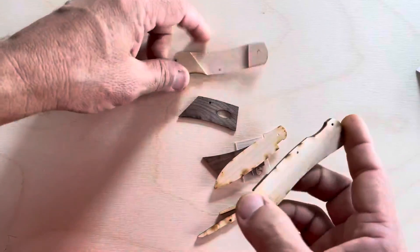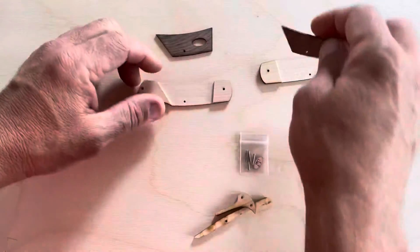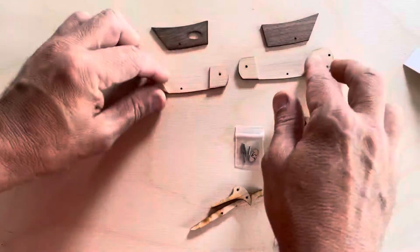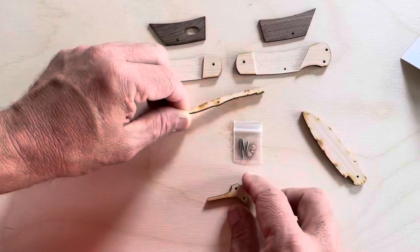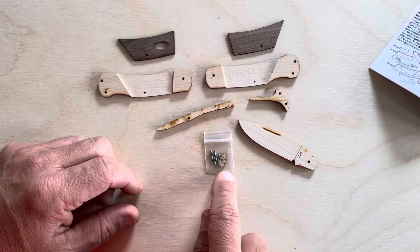In the package you've got two sides, two inlays or scales, a lock bar, a spring, and a blade. Four pins and one shield.